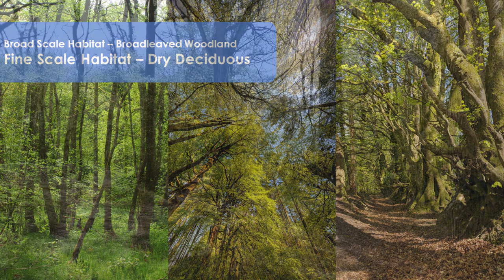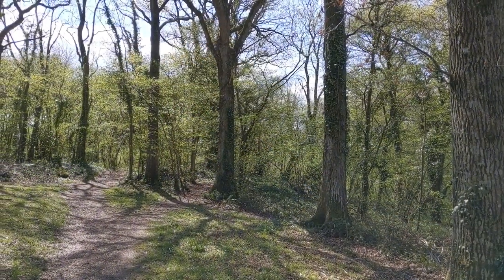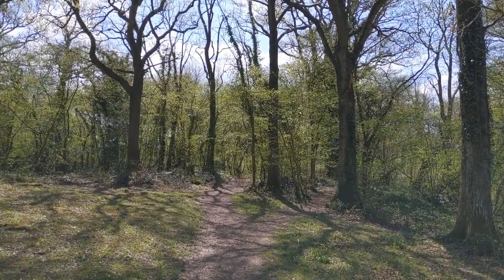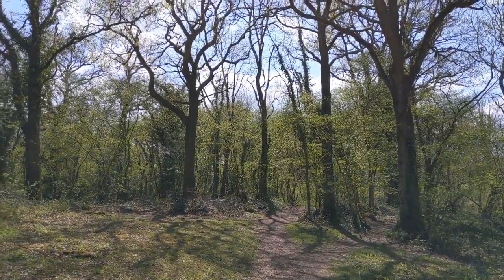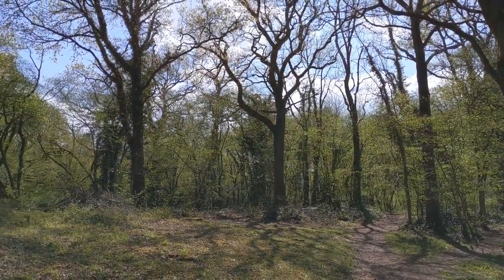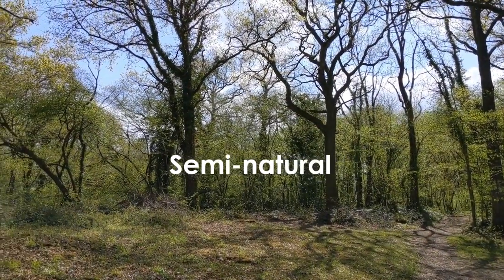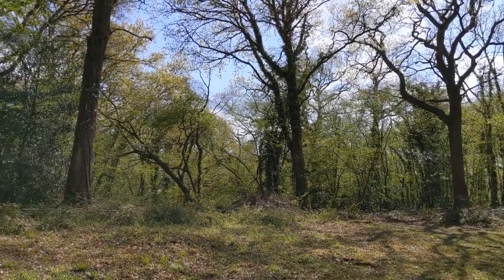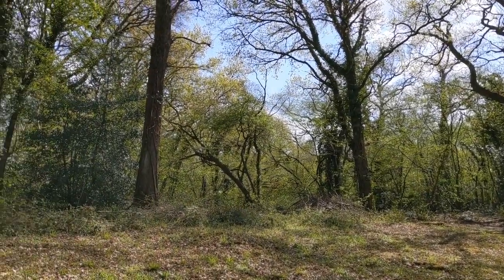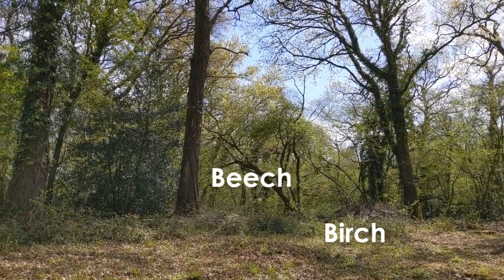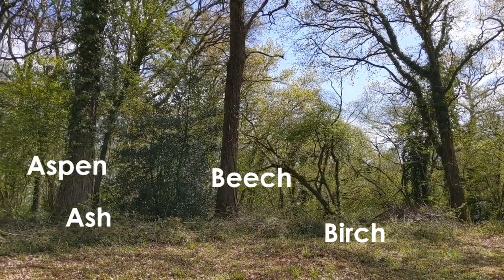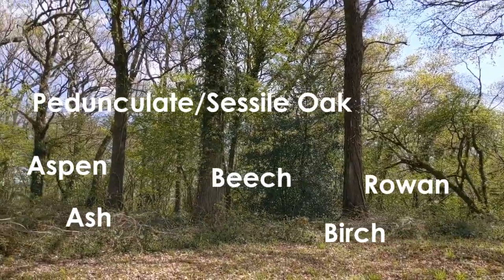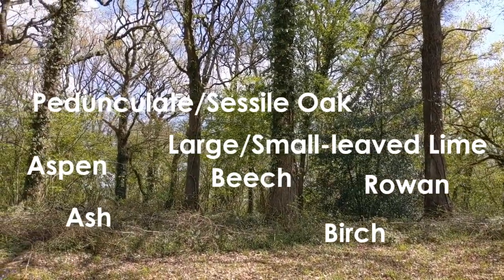In this video we're going to be looking at dry deciduous woodland within the broad scale habitat broadleaved woodland. Dry deciduous woodland includes natural or semi-natural woodlands with canopies made up of one or more of the following native broadleaved deciduous trees: birch, beech, ash, aspen, pedunculate or sessile oak, rowan, large or small-leaved lime, and wych elm.